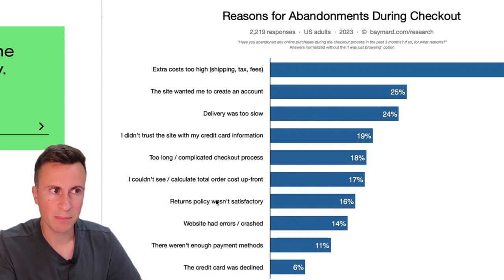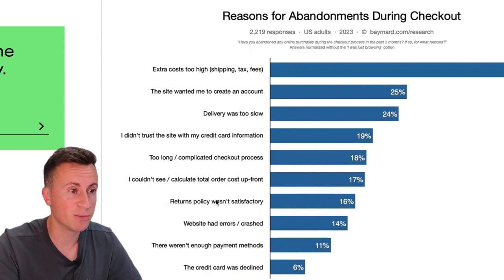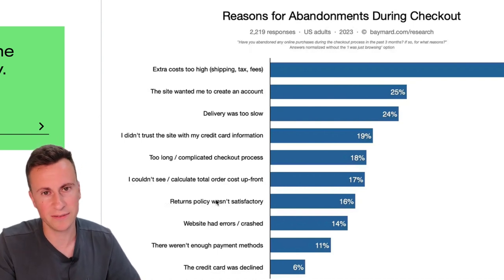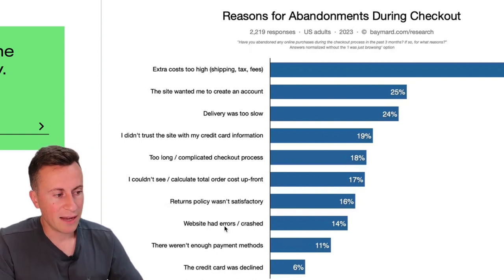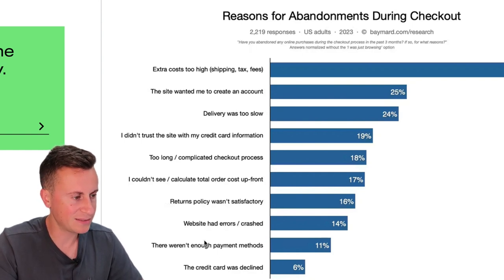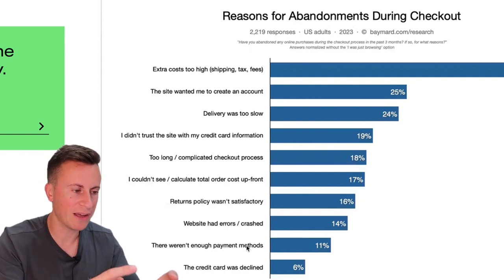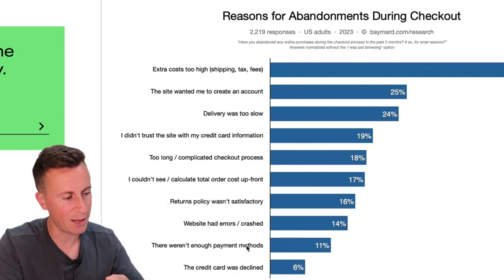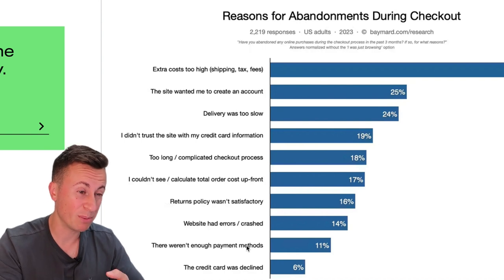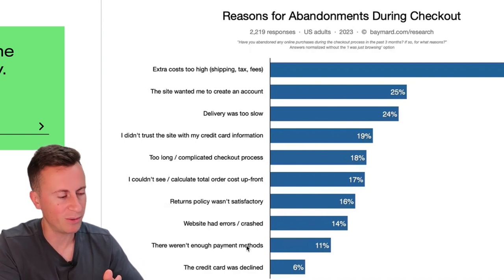Almost two in every ten people that come onto your site are going to be looking for a returns policy — if you don't have one, they'll leave without making a purchase. Website errors or crashes shouldn't be an issue if you're using one of the Shopify templates. There weren't enough payment methods — no excuse for this. You can have Amazon Pay, Google Pay, Apple Pay, PayPal, Klarna, Afterpay, Clearpay — it's free to have them on there, so why not?